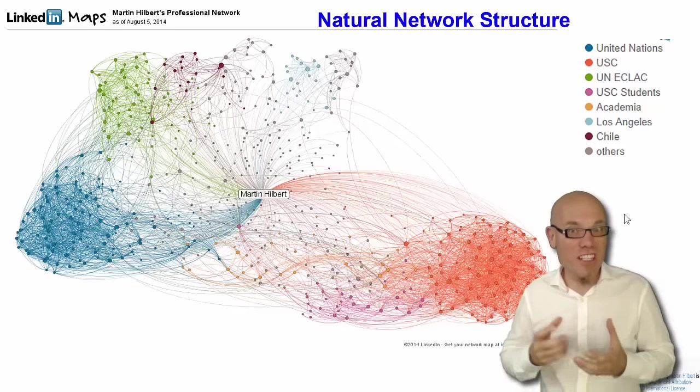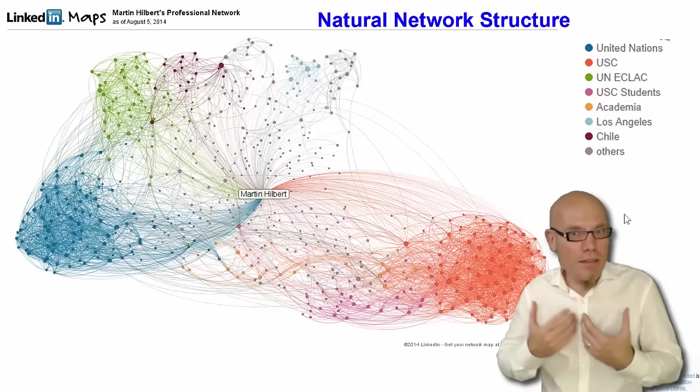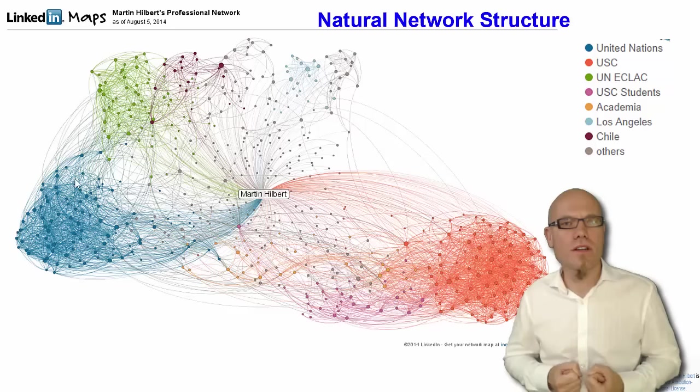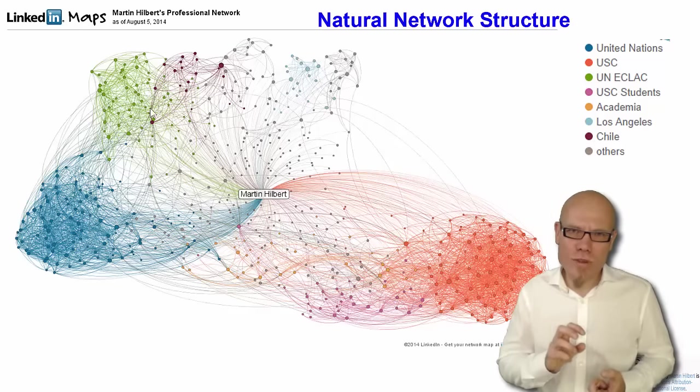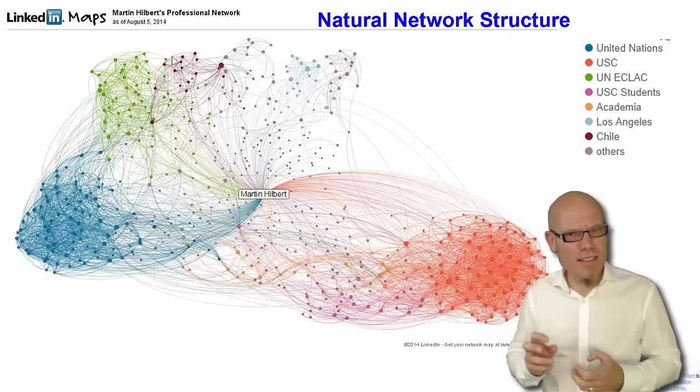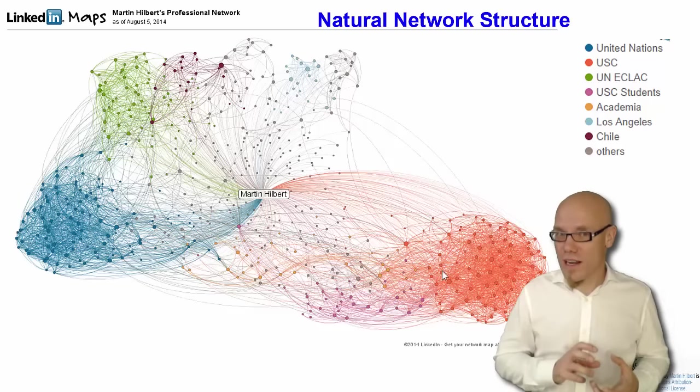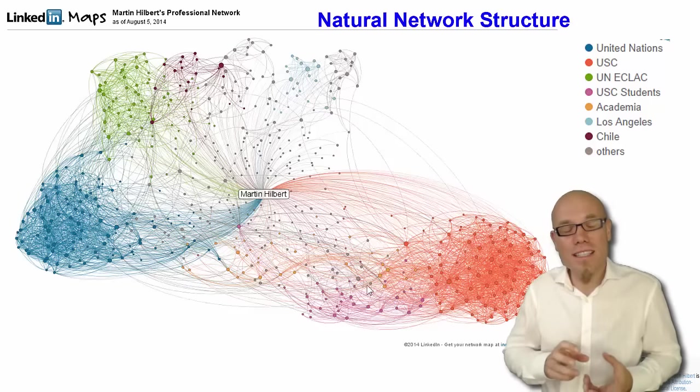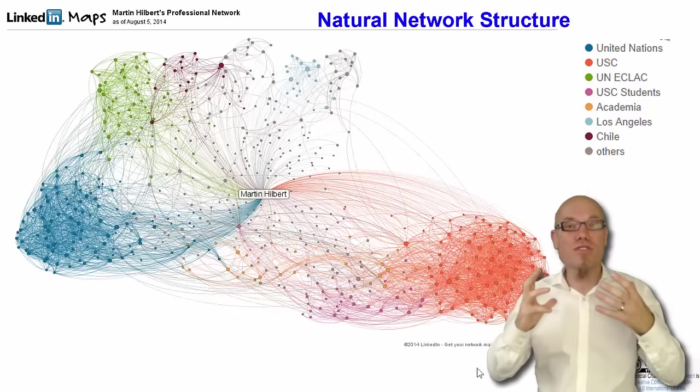For example, this here is the visualization of a digital network of mine. It's my LinkedIn network at a certain point, and it's very close to what I would have considered my professional network. Down here in the blue, these are colleagues from the United Nations Secretariat where I used to work for 10 years. This green cluster here are specifically colleagues from the UN in Latin America. And this little red cluster here, these are colleagues and friends from Chile where I used to live. Down here in this other cluster, you can see colleagues from USC where I used to work, and these are students I had at USC.